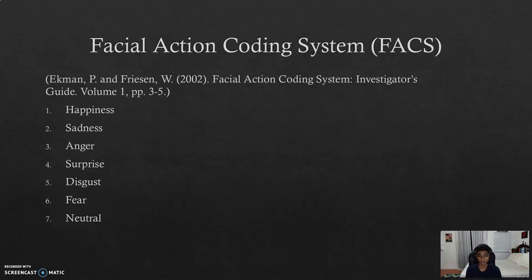The FACS system is a guide written by Dr. Paul Ackman which indicates that there are seven main emotions for humans: happiness, sadness, anger, surprise, disgust, fear, and neutrality. These are the seven emotions that we are basing ourselves on and were the preferred outcome of our system. We tried to implement a system which is capable of predicting or outputting one of these seven emotions.